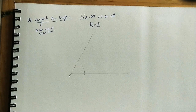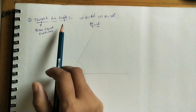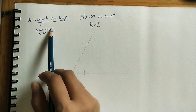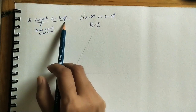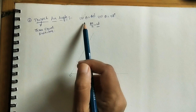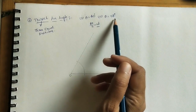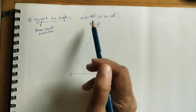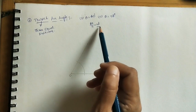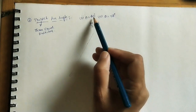Welcome to my channel. In today's class we will discuss trisecting an angle. Trisecting an angle means dividing the given angle into three equal parts. I am taking two cases: in the first case the given angle is 60 degrees, and in the second case the angle is 58 degrees. For the 60° case, 60 divided by 3 means each part is 20 degrees.